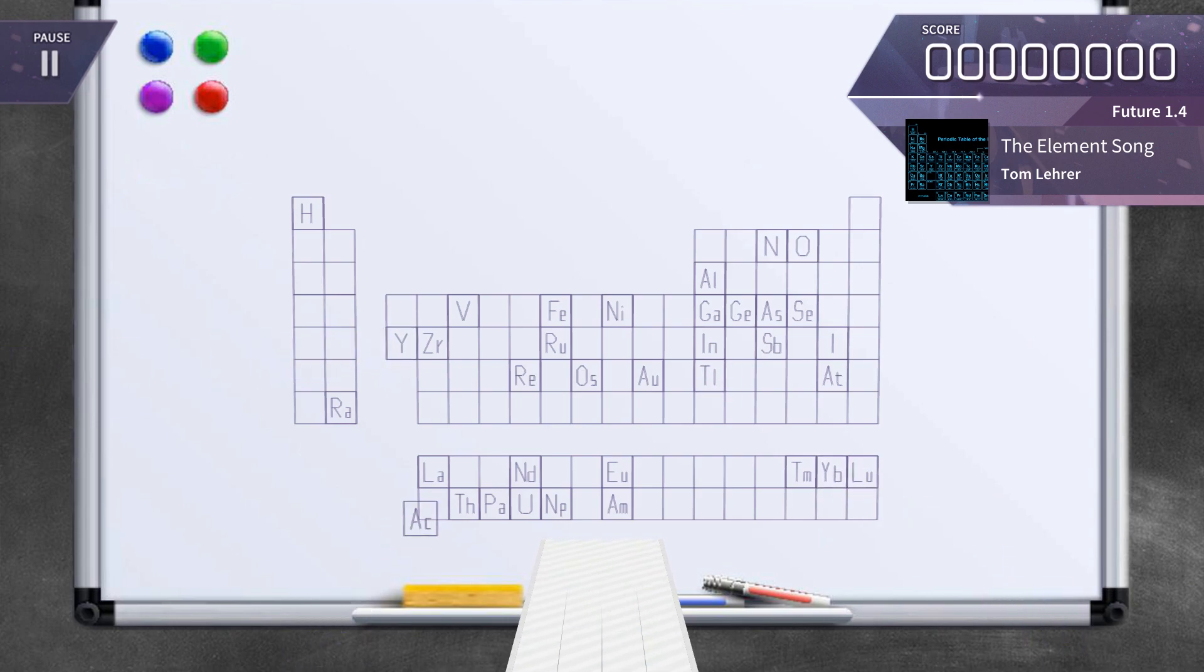There's yttrium, ytterbium, actinium, rubidium, and boron, gadolinium, niobium, iridium, and strontium, and silicon, and silver, and samarium, and bismuth, lithium, beryllium, and barium.